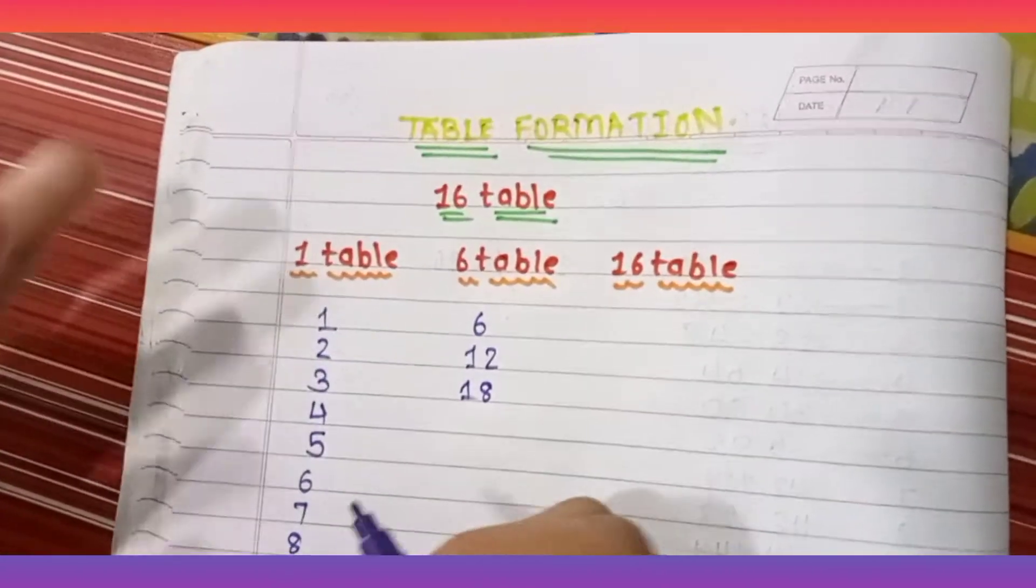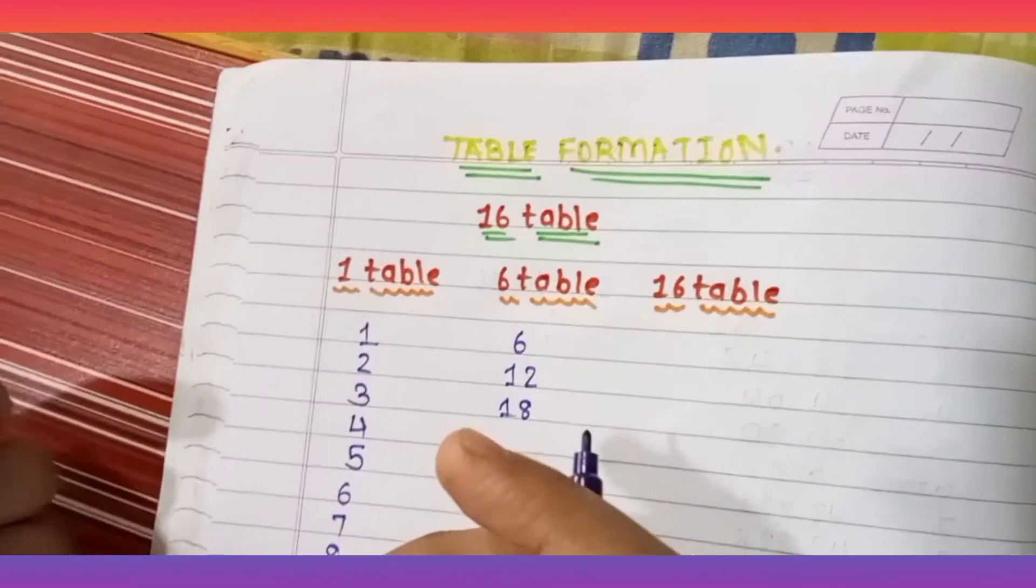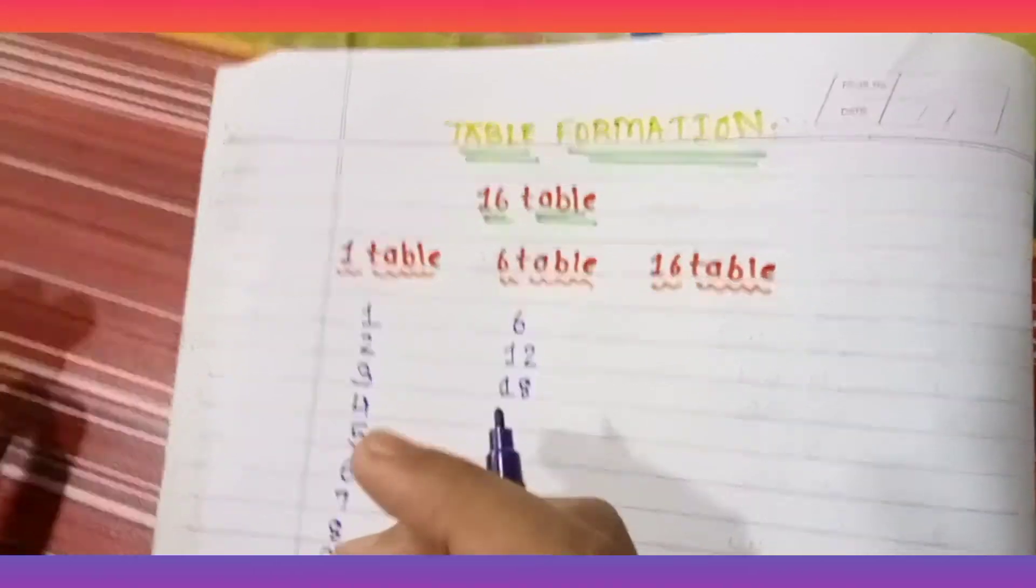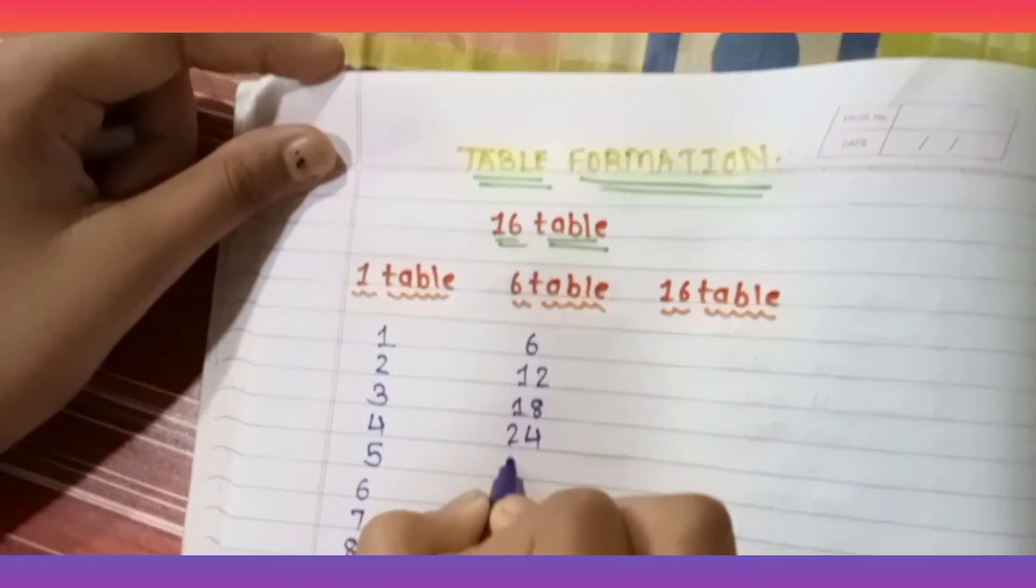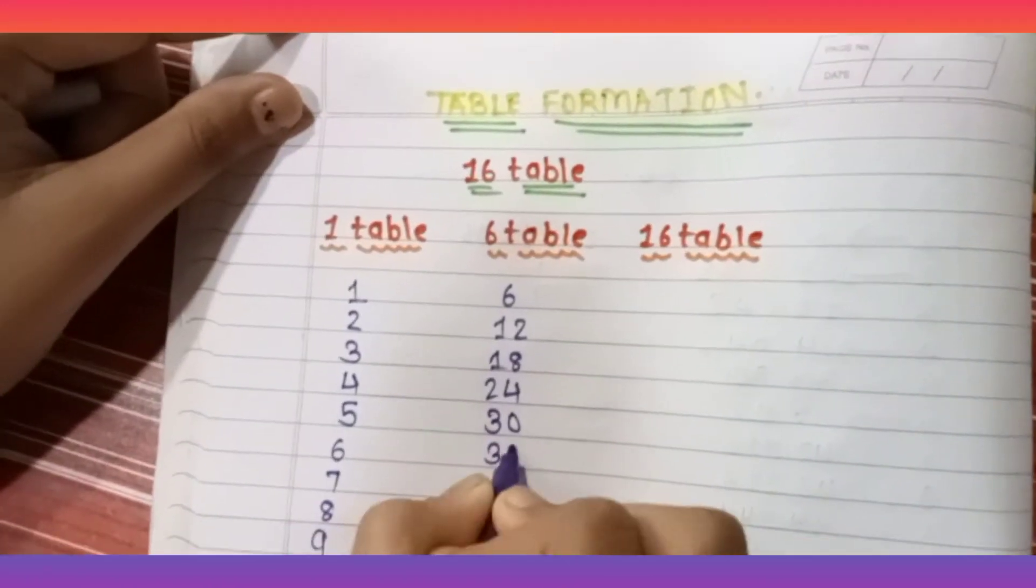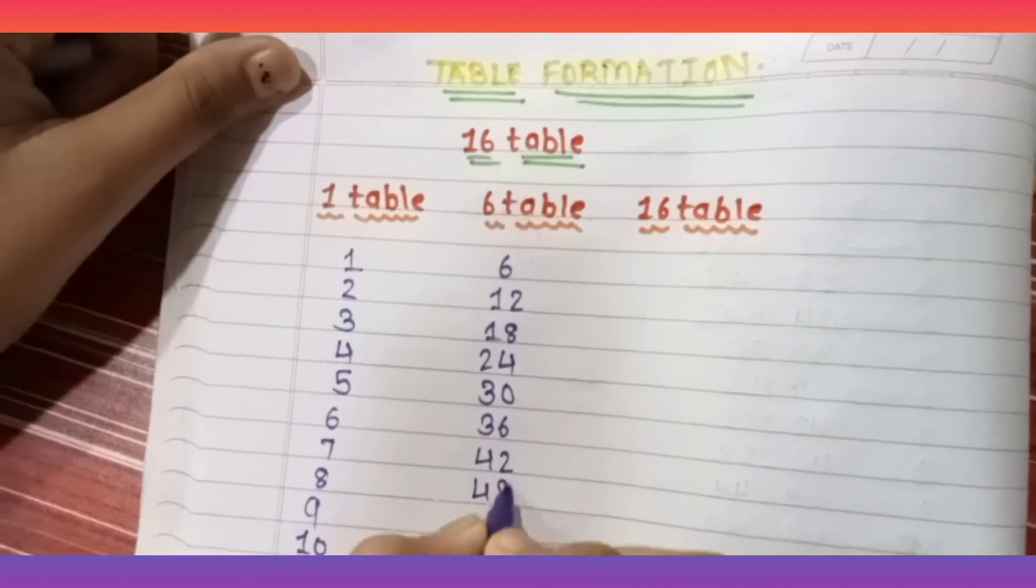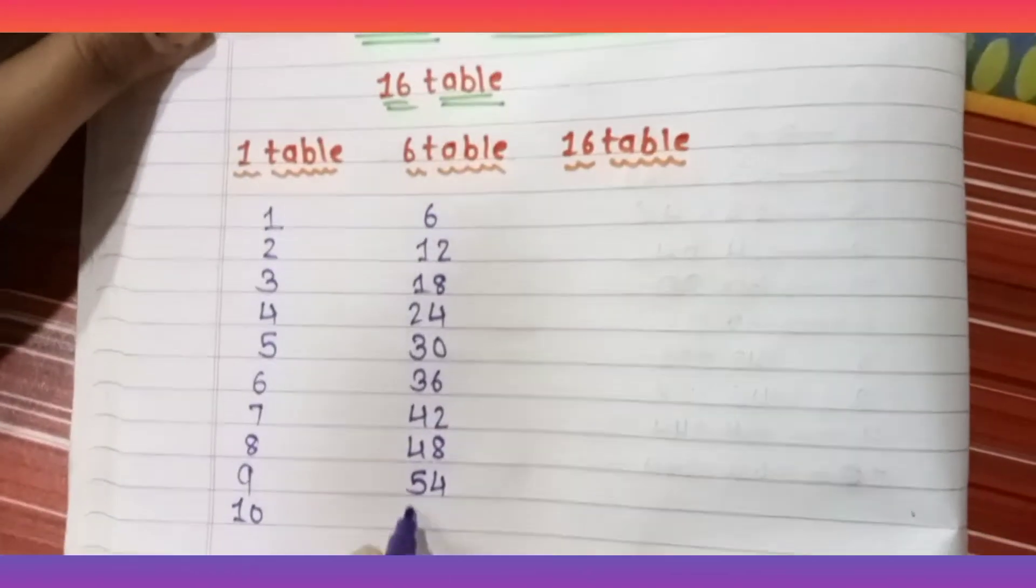It will take just 10 to 20 minutes. 6 times 4 is 24, 6 times 5 is 30, 6 times 6 is 36, 6 times 7 is 42, 6 times 8 is 48, 6 times 9 is 54, 6 times 10 is 60. Now what you have to do is combine these two: 1 and 6 to make 16.